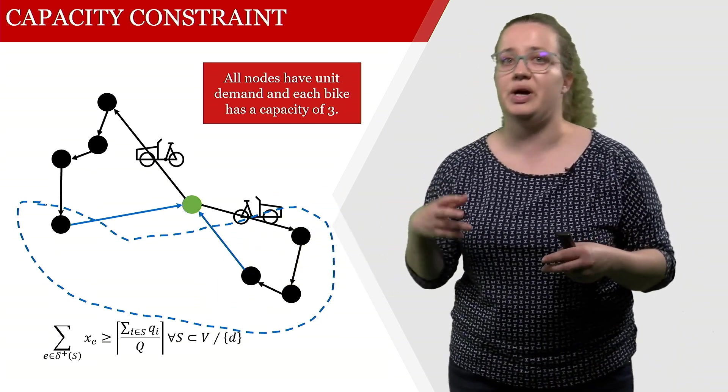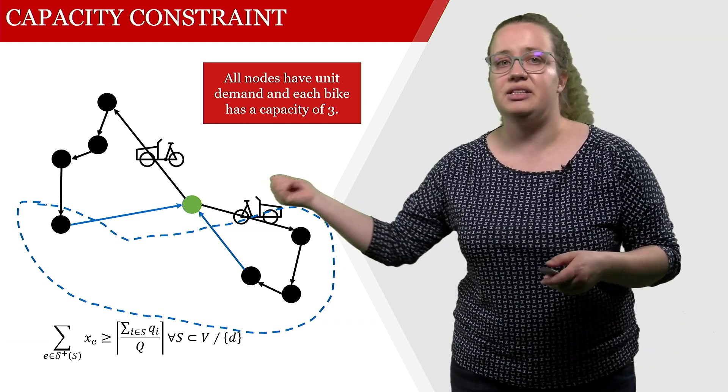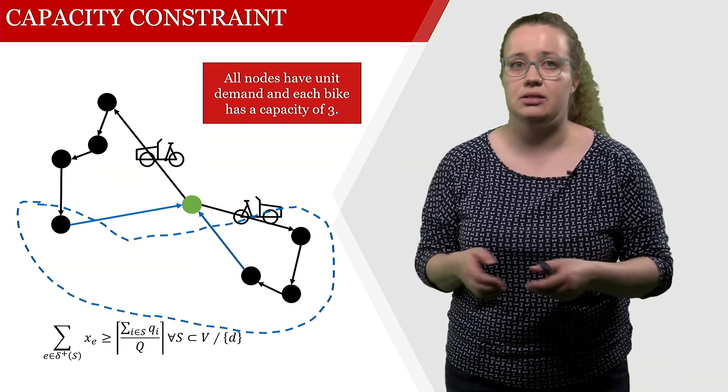Due to these brackets that we're having, we're rounding up to the next full integer, so we have two. This also works because here we have these two arcs that actually leave this subset. So we're good.